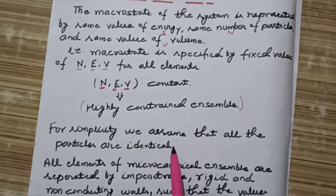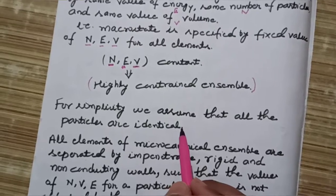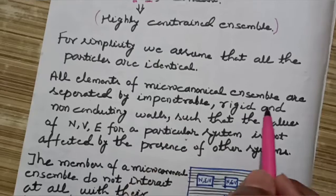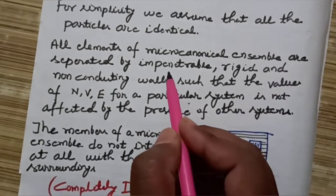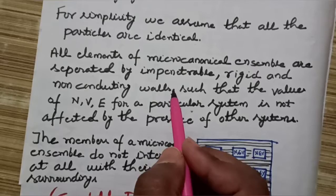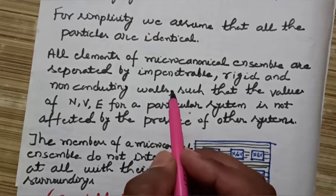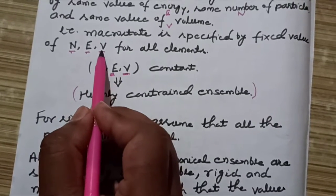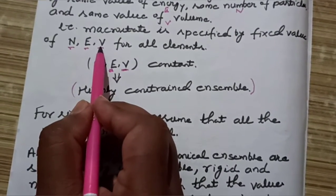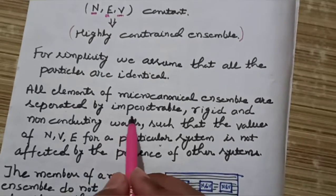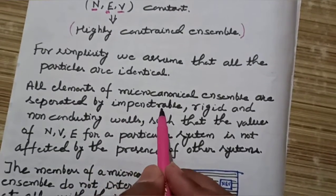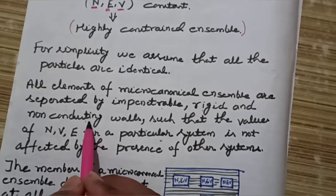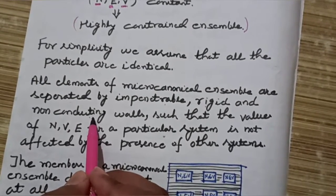We assume that all the particles are identical. The elements of the micro canonical ensemble are separated by impenetrable, rigid, and non-conducting walls. This is done to keep the number of particles, energy, and volume constant. Non-conducting walls ensure there is no energy exchange.